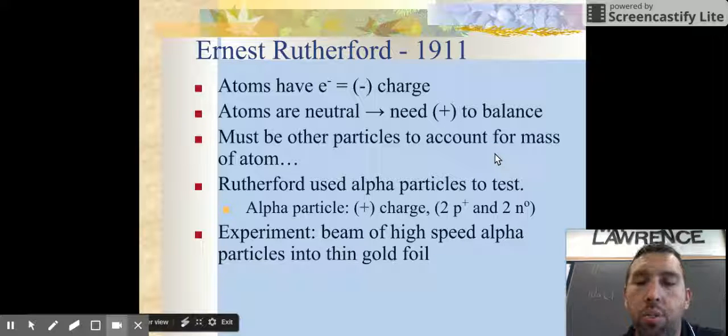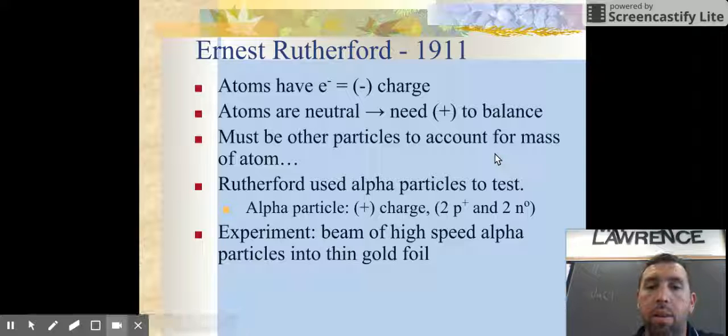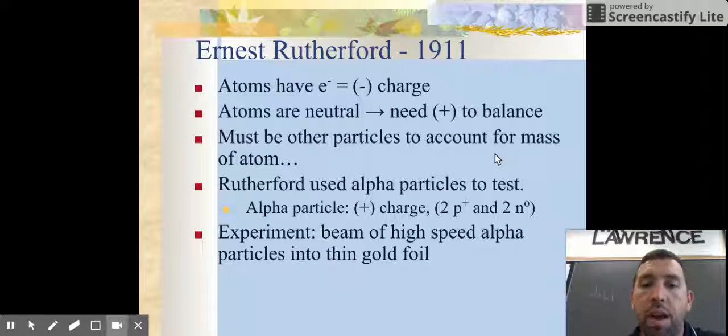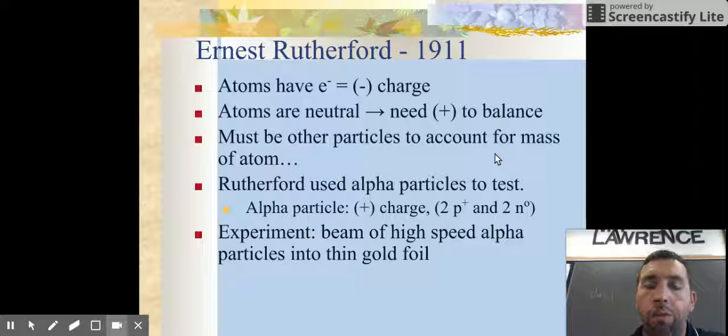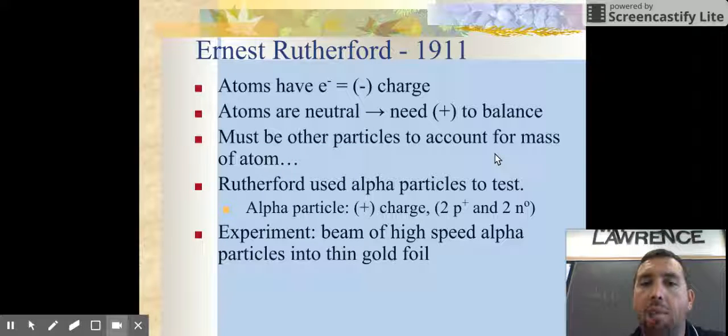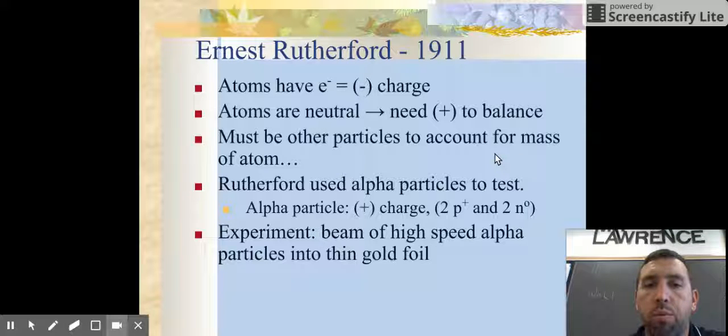So whether or not we know what it is, we do know there's these three elements here: something with mass with no charge, something with mass with a positive charge, and something with very little mass and a negative charge. Rutherford wanted to test Thompson's plum pudding theory. He wanted to see and wanted to prove the idea of what the atom looked like and how all those particles or subatomic particles were arranged.